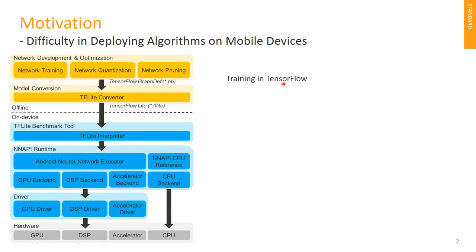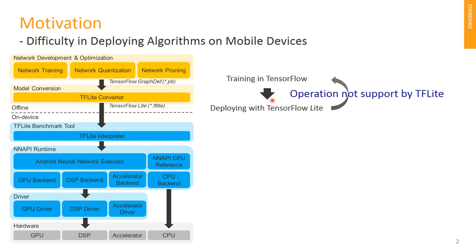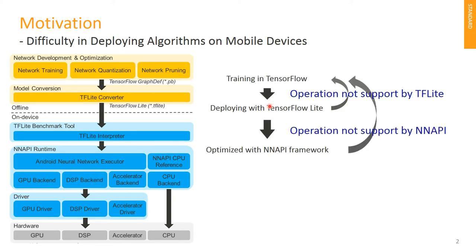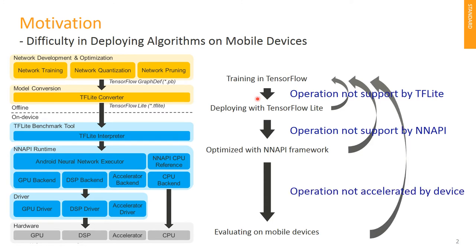We realized that there is a large gap for algorithm developers to deploy their deep learning network on mobile devices. For example, you train your network in TensorFlow and then convert it into TensorFlow Lite format. However, you find some operations could not be successfully converted, so you need to modify them. After you are done, you want to run your network with NNAPI framework for better acceleration. Again, you find some operations not supported by NNAPI. The iterations repeat again. Finally, the network is evaluated on mobile device with NNAPI, but the latency is not good enough due to operations that are not accelerated in your device. You may need to change your network again and again, which is very annoying. It's very difficult for algorithm developers to deploy their networks on mobile devices successfully.